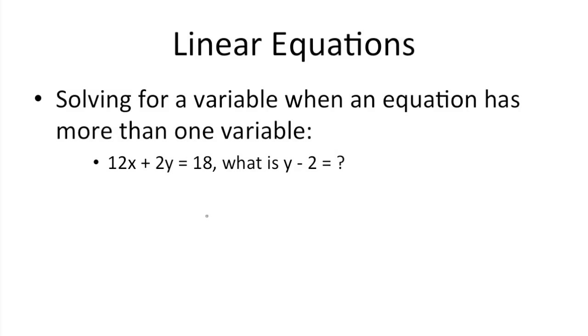So solving for a variable when an equation has more than one variable. The way to go about doing this is to solve for one variable in terms of the other variable. So for instance, we have 12x plus 2y is equal to 18. What is y minus 2? What we have to do here is solve for y in terms of x on this side, and then substitute that value into the y here in order to get what y minus 2 is.